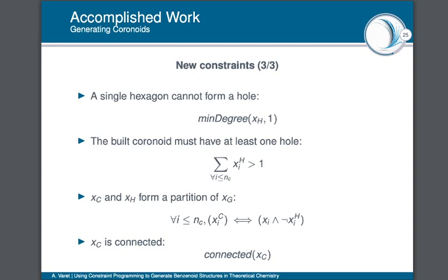We also represent the fact that only purely-surrounded vertices of XG can be vertices of XH: if a vertex is in XH, then the sum of variables associated to its neighborhood must equal 6. Then we represent the fact that a single hexagon cannot form a hole — each vertex of XH must have degree greater than 0. We also specify that each solution must have at least one hole, so XH has at least one vertex. Finally, we add a logical constraint that a vertex is in XC if and only if it is in XG and not in XH, and we require XC to be connected.